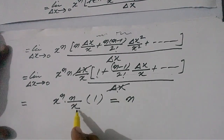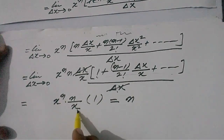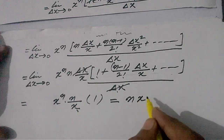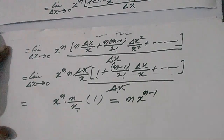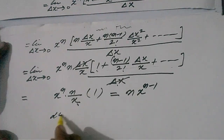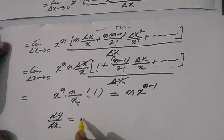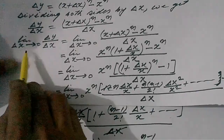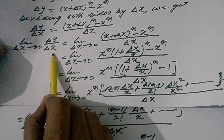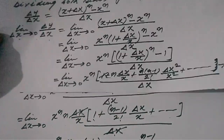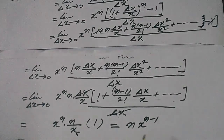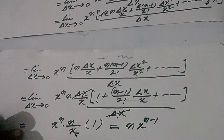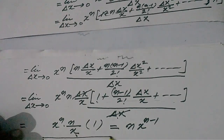So by the theory of indices, x raised to the power n upon x can be written as x raised to the power n minus 1. So ultimately we have found dy upon dx is equal to n x raised to the power n minus 1. As I have told you, the expression limit delta x tends to 0 of delta y upon delta x is denoted by dy upon dx. So ultimately dy upon dx is equal to n x raised to the power n minus 1, if y is equal to x raised to the power n. This is the proof of the differential coefficient of x raised to the power n is n x raised to the power n minus 1.